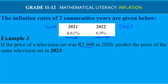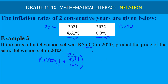We take the original price of R5600, open a bracket with 1 — the 1 keeps the original price — then add the 2021 inflation rate of 4.61%, written as 4.61/100. We then add another bracket for 2022 with an inflation rate of 6.9%, written the same way.